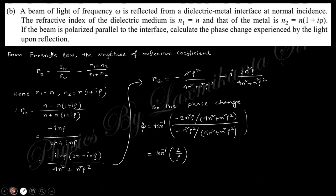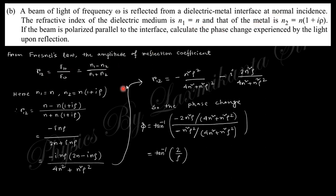Next question: a beam of light of frequency ω is reflected from a dielectric-metal interface at normal incidence. The refractive index of the dielectric medium is n₁ = n and the metal has n₂ = n₁ + iρ. The beam is polarized parallel to the interface. Calculate the phase change. From Fresnel's law, for normal incidence, the reflection coefficient is r₁₂ = (n₁ − n₂)/(n₁ + n₂). Substituting n₁ = n and n₂ = n + iρ gives the complex reflection coefficient.